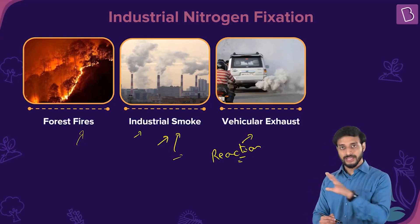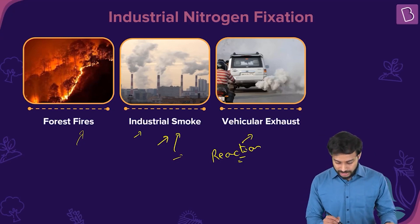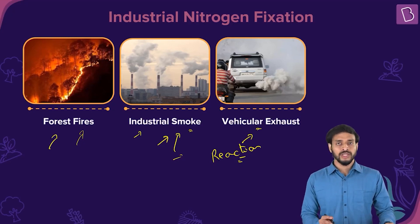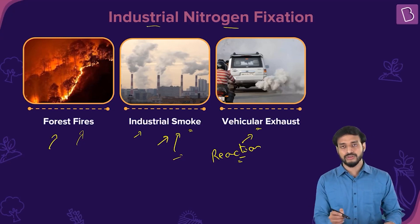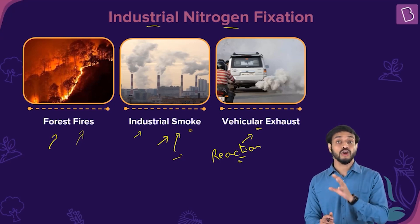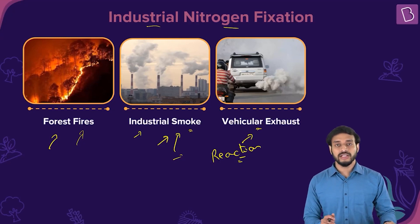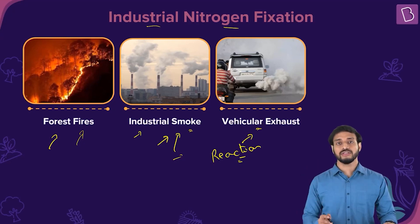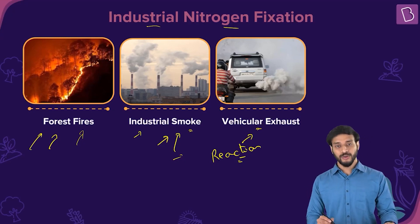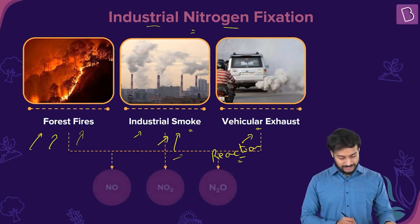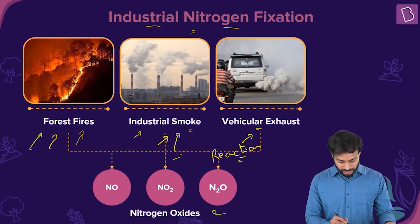Industrial smoke, vehicular exhaust, and forest fires all contribute to industrial nitrogen fixation. Forest fires can be natural or caused by human interference — for example, clearing forests to build industries or residential areas. These forest fires help in the nitrogen fixation process. Eventually, these nitrogen oxides find their way into the soil.